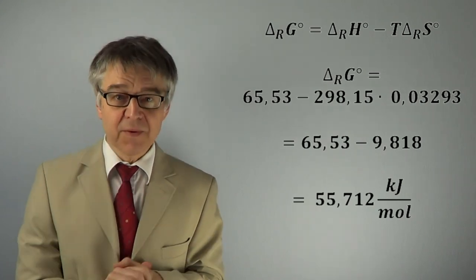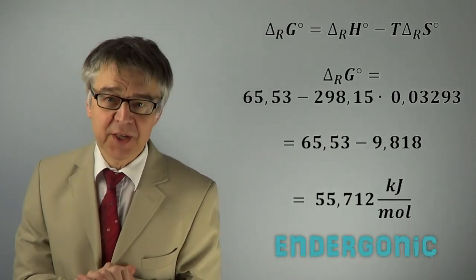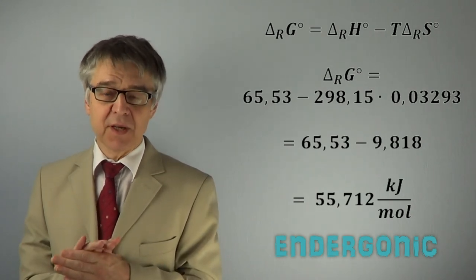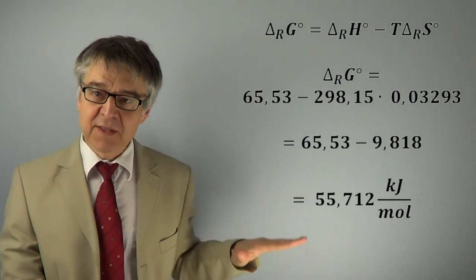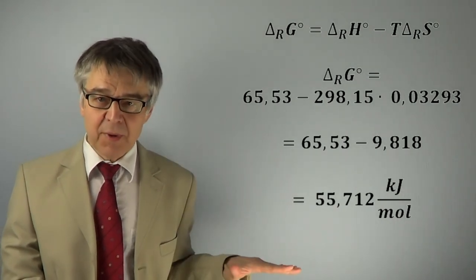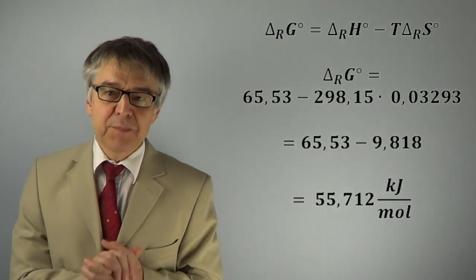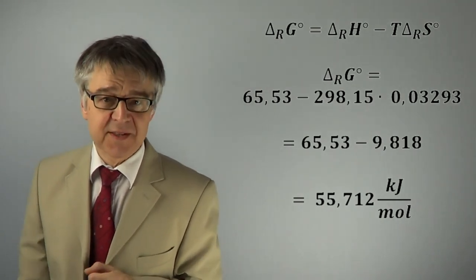Thus, the reaction is energetically unfavorable at room temperature. G is a measure of instability. The pure reactants are more stable than the pure products. The equilibrium lies on the reactant side.